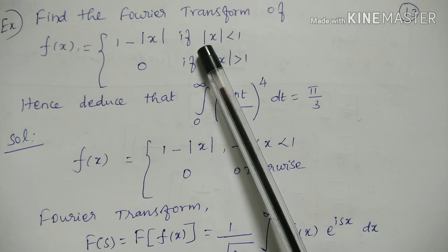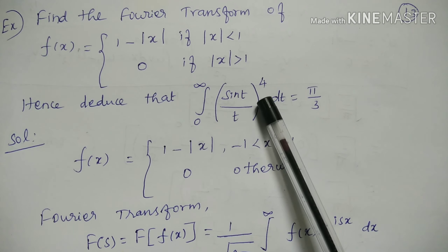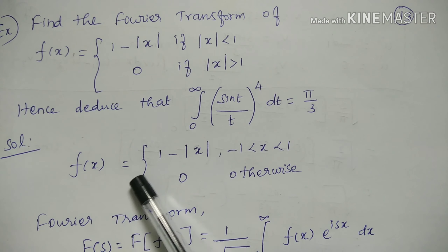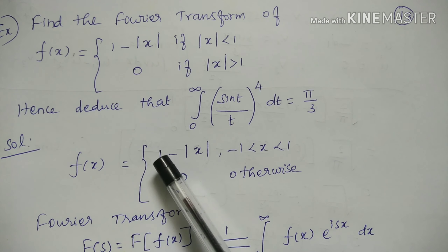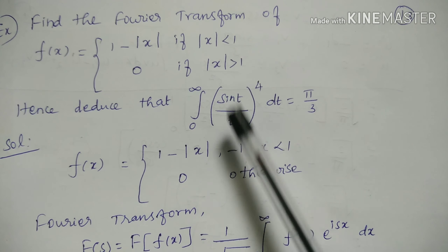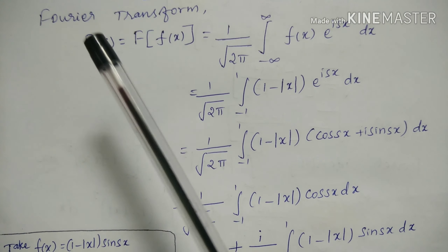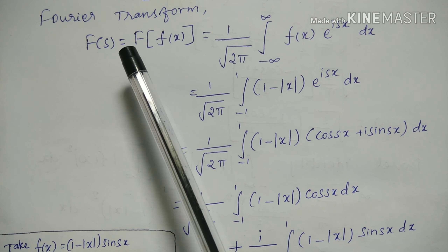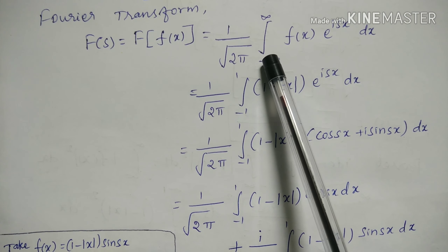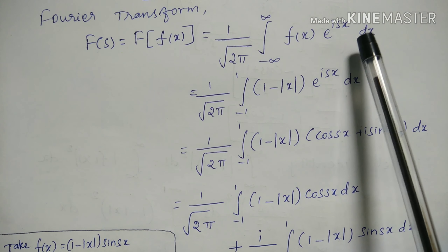Solution: First, we find the Fourier transform. Then we use Parseval's identity formula to prove the deduction part. The given function is f(x) = 1 − |x| for −1 < x < 1, and 0 otherwise. The Fourier transform formula is F(s) = (1/√(2π)) · integral from minus infinity to infinity of f(x)·e^(isx) dx.